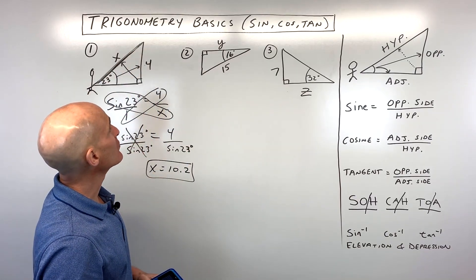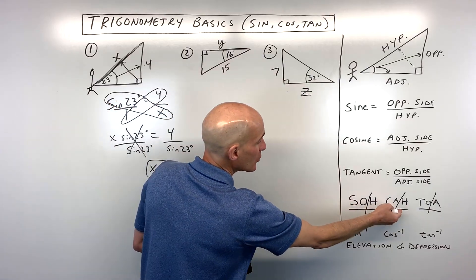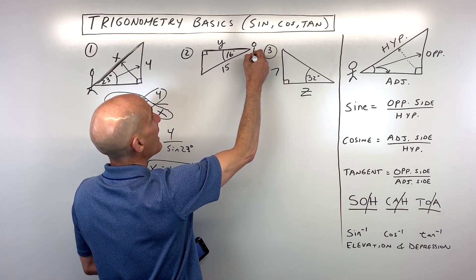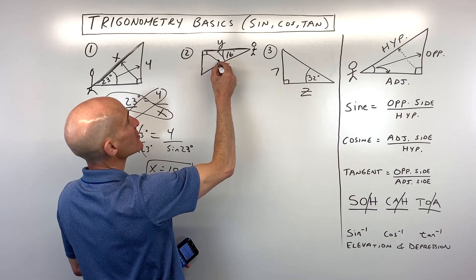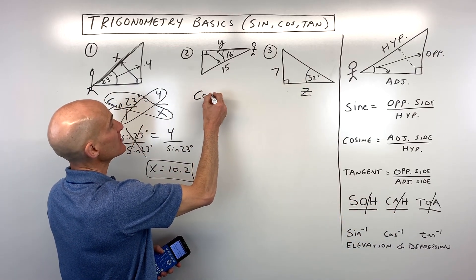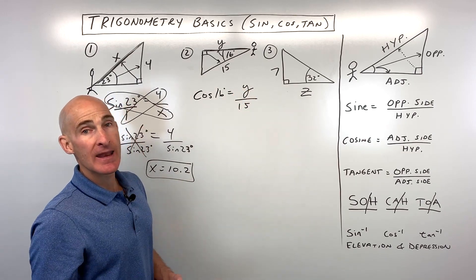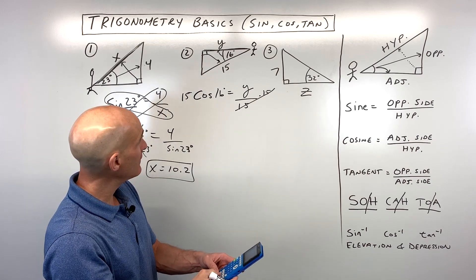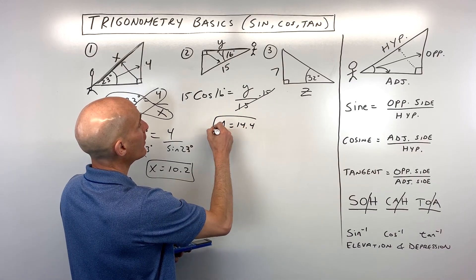For number two, we're solving for missing side y. Positioning ourselves at the 16-degree angle, the side y is adjacent and the given side is the hypotenuse. Adjacent and hypotenuse — that's 'CA', which is cosine. So the cosine of 16 degrees equals the adjacent side y divided by the hypotenuse 15. To solve, multiply both sides by 15: 15 times the cosine of 16 degrees comes out to about 14.4. That's the missing side.